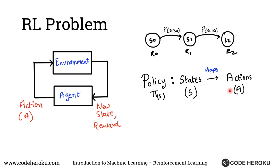The new thing over here is we said that we are interested in finding a policy. The goal of any reinforcement learning algorithm is to come up with this policy, which maps all the states to an action. If I am in this state, what is the next action I should take? Should I go from S0 to S1 or to S2 directly? My determining factor will be which path gets me more rewards.